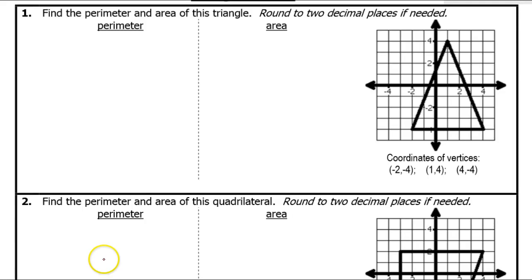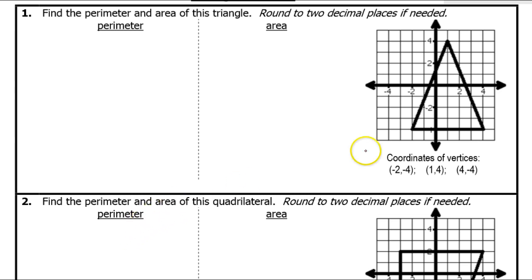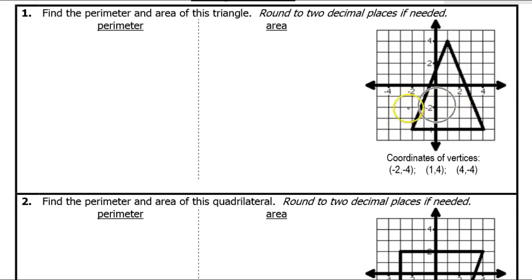In this video, I will show you how to find the perimeter and area of various polygons. The perimeter is the sum of all the sides, so the first thing we need to do is find the lengths of each side.